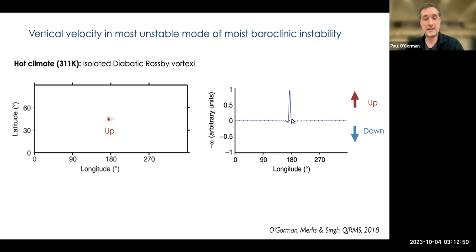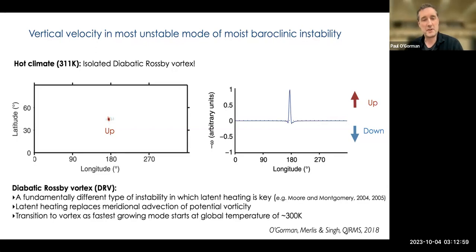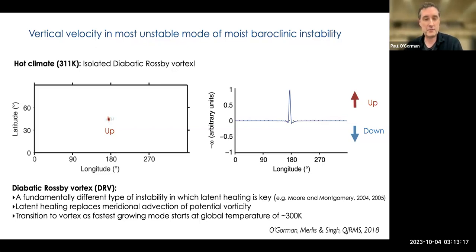It turns out this has been seen in models before and in observations — it's called a diabatic Rossby vortex. That becomes the fastest growing mode in a warm enough and moist enough climate. This is a fundamentally different type of instability — it's not like dry instability with a slight modification from latent heating. Latent heating is key to this type of instability. Basically, latent heating replaces meridional advection of potential vorticity — we'll talk about what that means later.